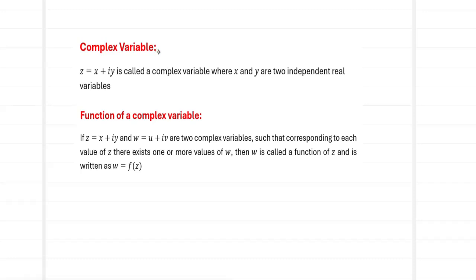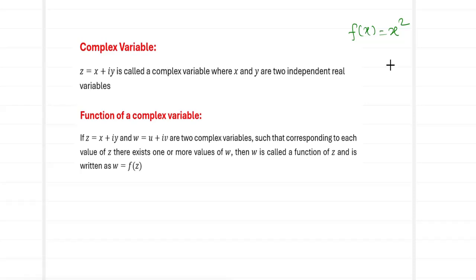First we will define what is meant by a complex variable. We have normally worked with real functions — say a function like f(x) = x². Here x is a real number, so this function is called a real function. Now we are introduced to an extension of real numbers called complex numbers. Any number of the format z = x + iy is called a complex variable, where x and y are two independent real variables, and i is the imaginary unit satisfying i² = −1.